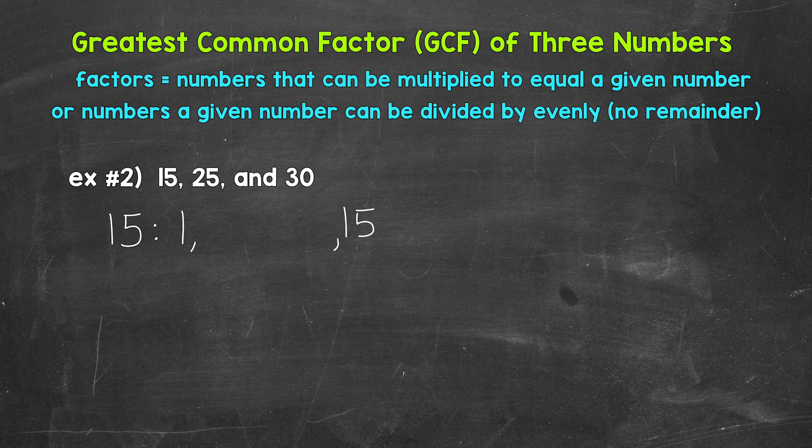The next factors of 15 are 3 and 5. 3 times 5 equals 15. So 3 and 5 are factors of 15. And again, we can think of these factors in terms of division as well. We can divide 15 by these factors evenly. And that's actually it for the factors of 15.